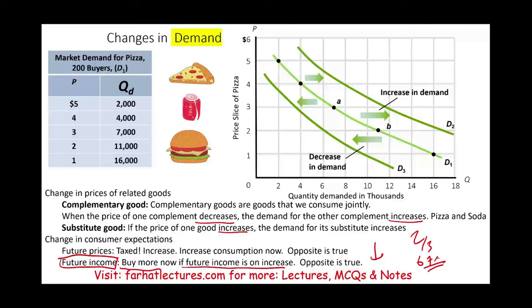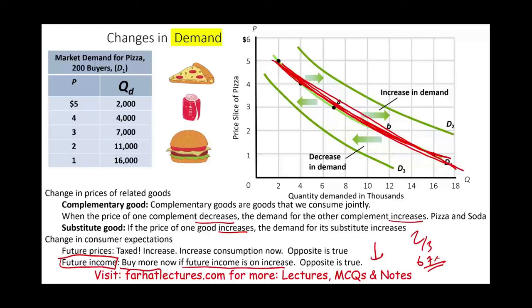So those are the things that could shift the demand curve to the right or to the left — increase demand or decrease demand. Remember, we have two types of shifting: movement along the curve, which has to do with price, and shifting the curve itself to the right or to the left. To the right means increased demand; to the left means decreased demand. Next, we're going to look at the law of supply. Go to Farhat Lectures for additional MCQs and lectures — those are easy points on the CPA exam. Good luck, study hard, invest in your CPA, and stay safe.